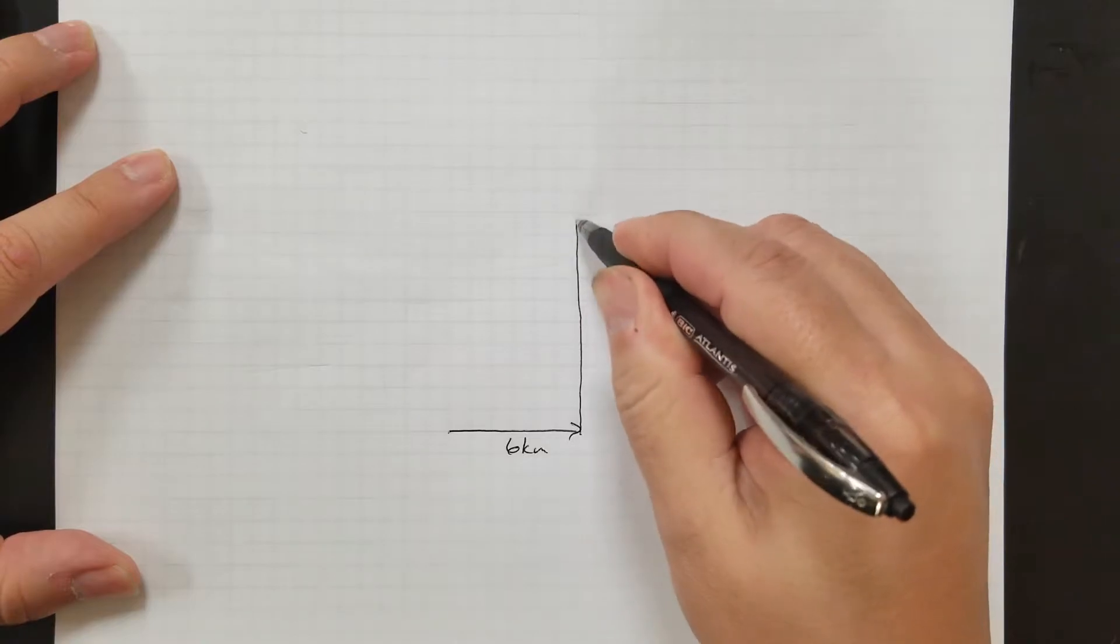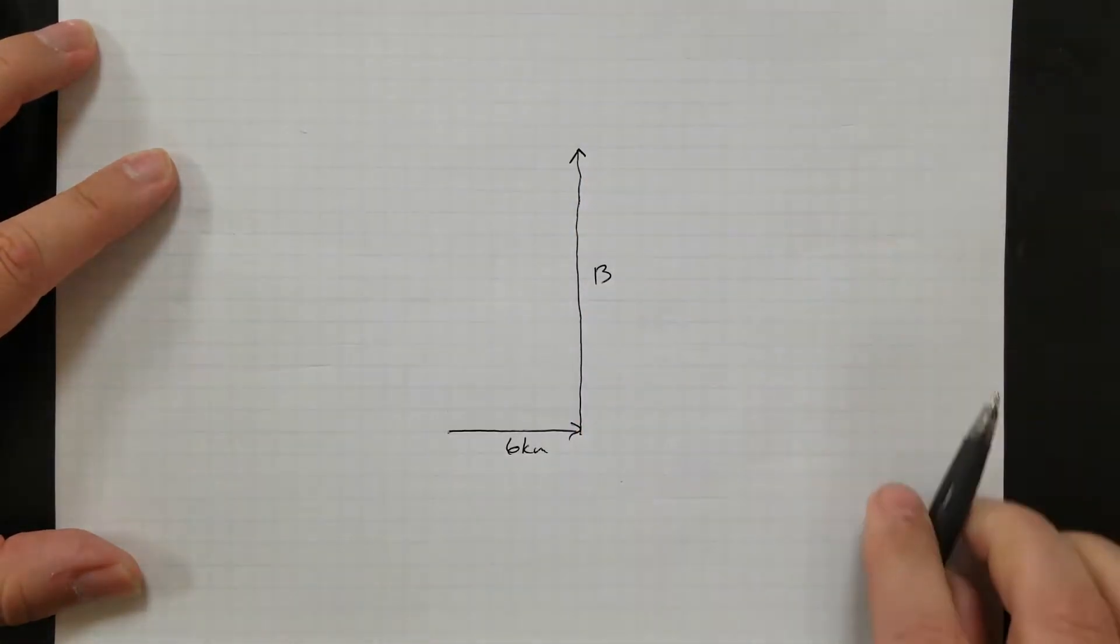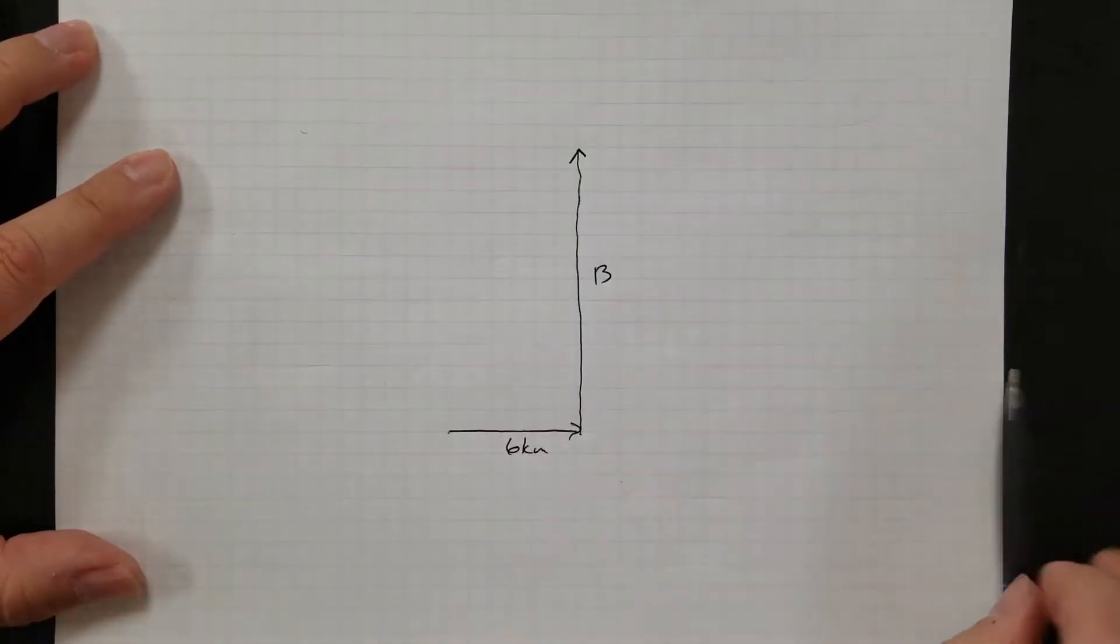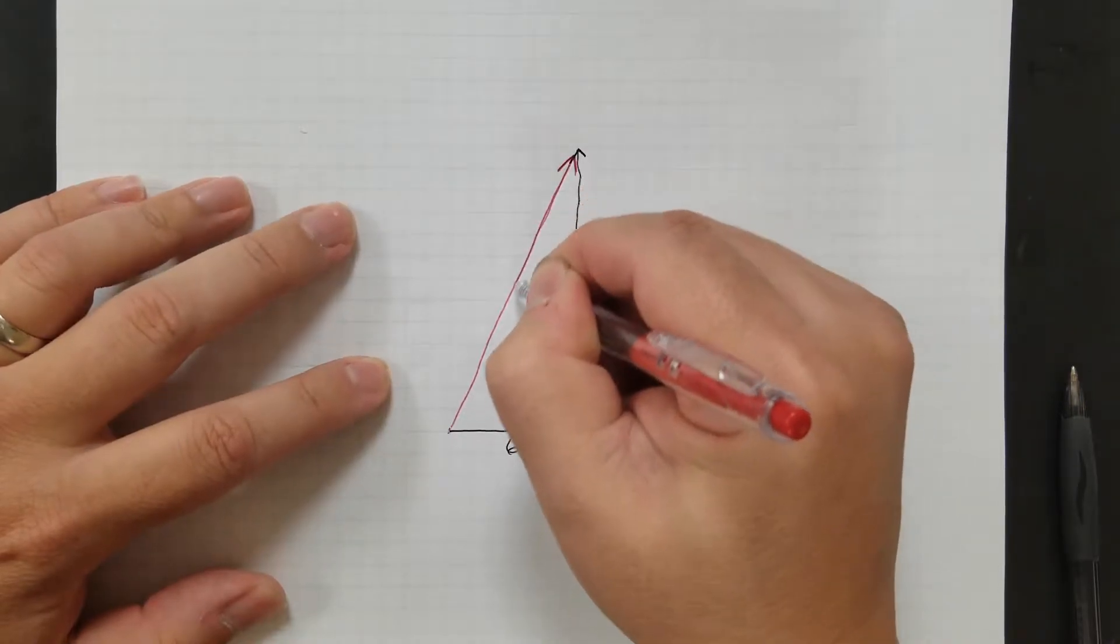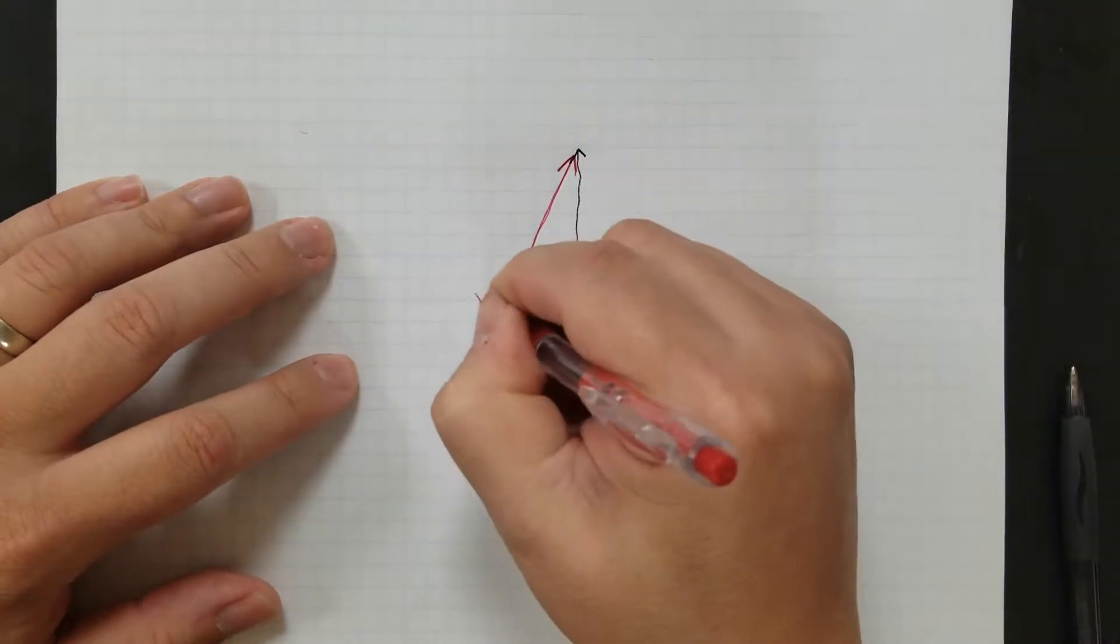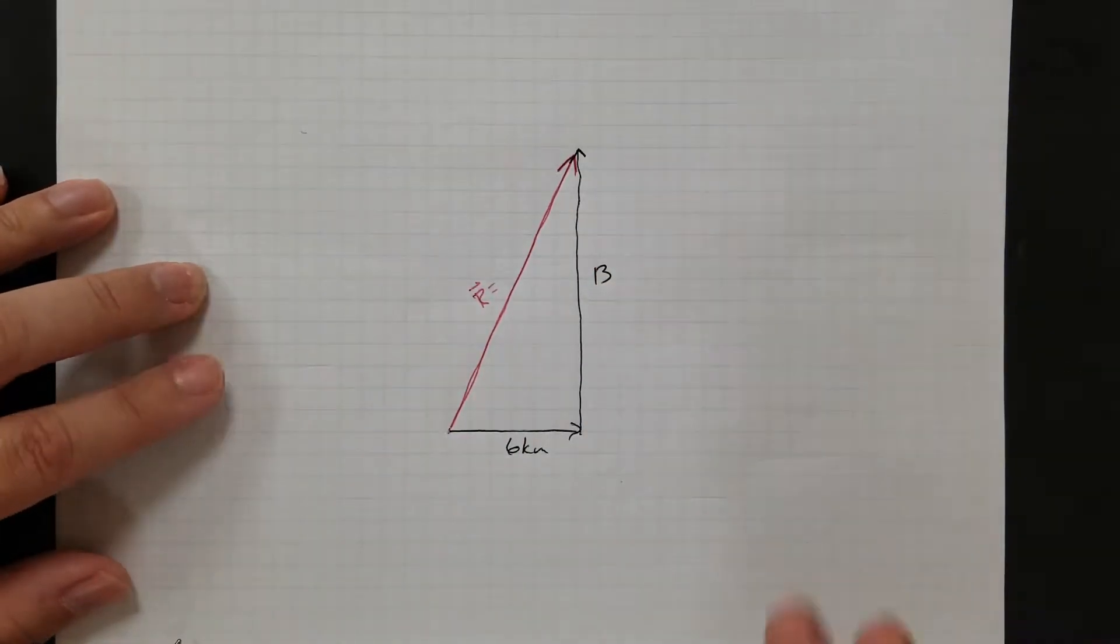So 2, 4, 6, 8, 10, 12, 13. So about like that, and then my resultant. It helps to draw your resultant in a different color or a darker line or something. There's my resultant, so this is r, and I want to know what r is.